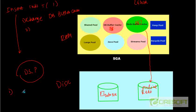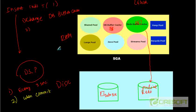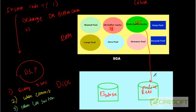Number one: it will write every three seconds. Number two: when somebody does a commit — if somebody is doing a commit, then it is going to write when the commit happens. Number three: when a log switch happens. Remember we discussed about online redo log files — once one online redo log file is filled, it spills over, and that is called a log switch. So whenever a log switch happens, log writer is going to write the redo buffer cache to the online redo log file.